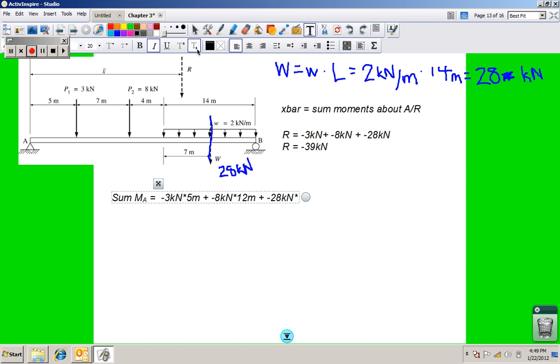It is 28 kilonewtons times, now stay with me here guys, it's the 5 plus the 7 plus the 4, plus another 7 meters. So 5 plus 7 is 12, plus 11 is 23. So that's causing a big number down there at the end. Let's see what those are equal to when I plug them into my calculator.